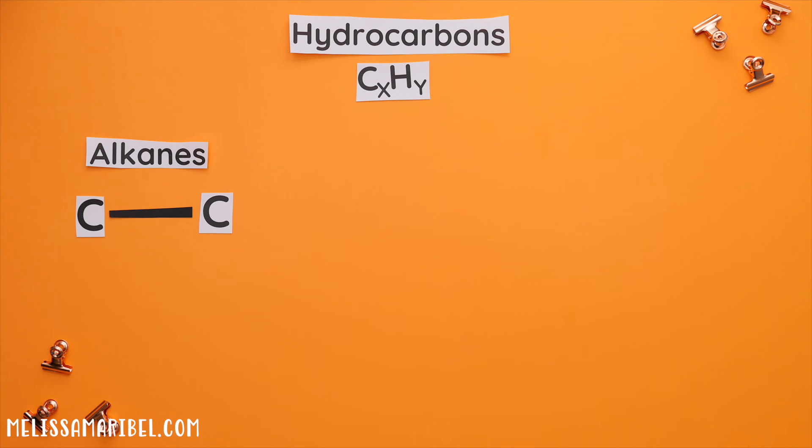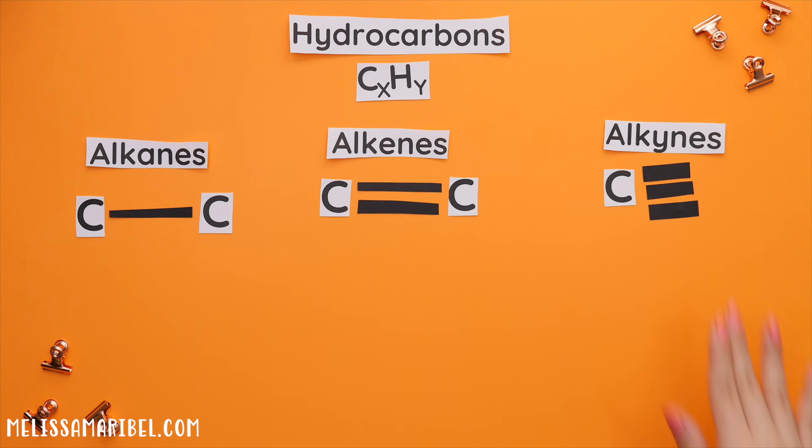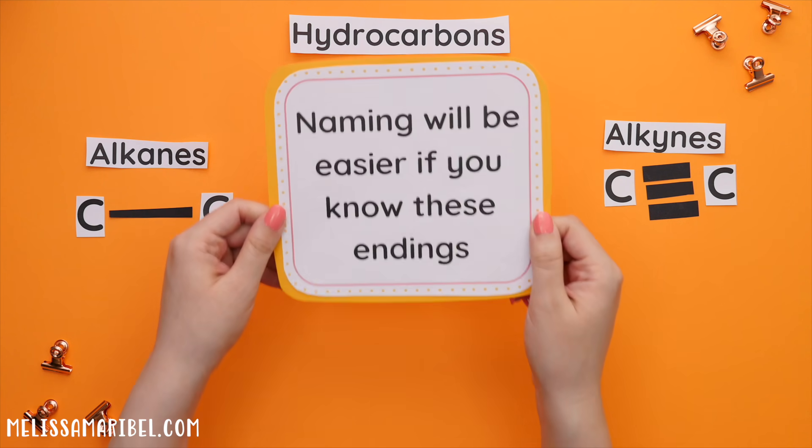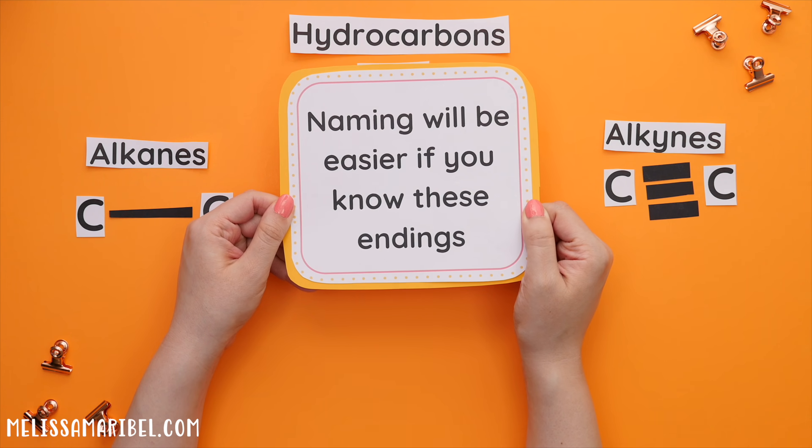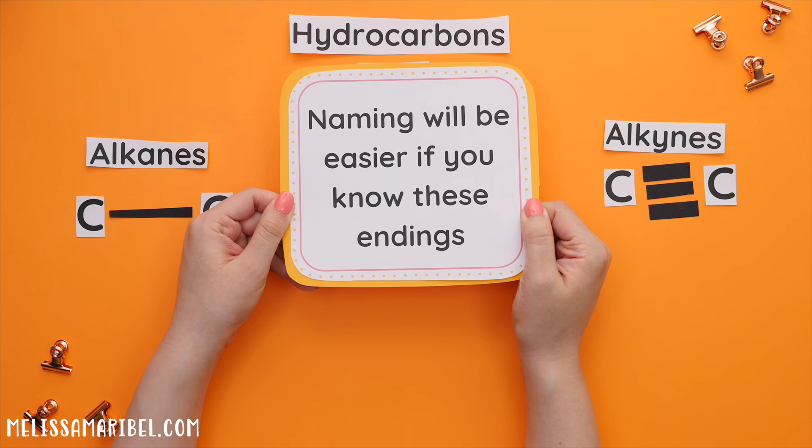Alkanes have single bonds. Alkenes have at least one double bond and alkynes have at least one triple bond. You will later get into naming different types of structures. So know that the ending is very important.